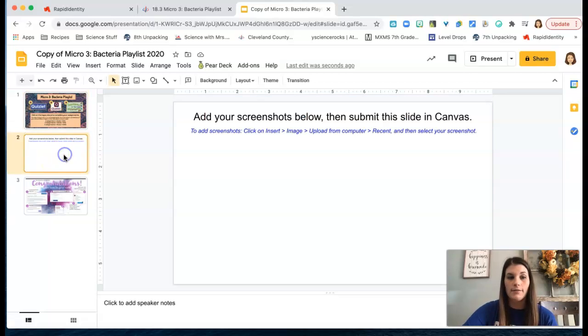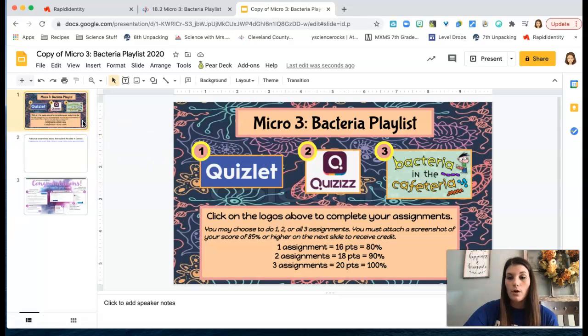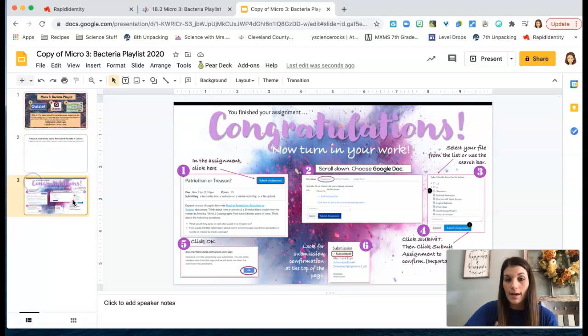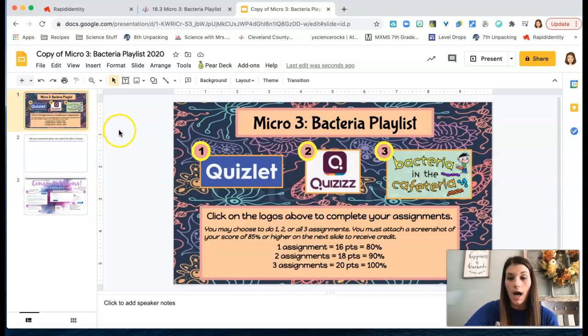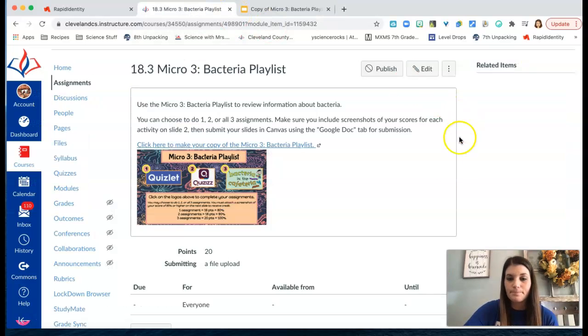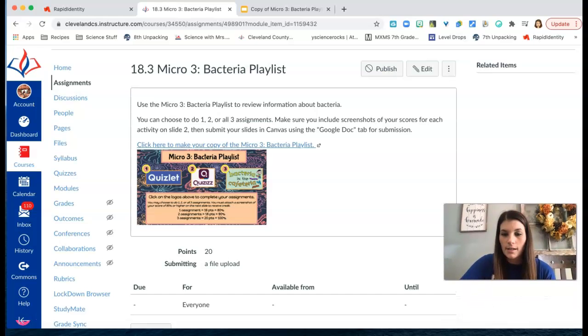So again here is where your screenshots will go. You can follow these directions to insert the pictures. You'll probably have to resize them a little bit and then you just go in and submit this whole slideshow right in Canvas. If you've forgotten how to do that these directions will help you, but basically you need to make sure you click the Google Doc tab at the bottom of submission and go through it that way. Do not submit it as a file submission like a screenshot because your teacher will not be able to see it. If you have questions about that please email your teacher.